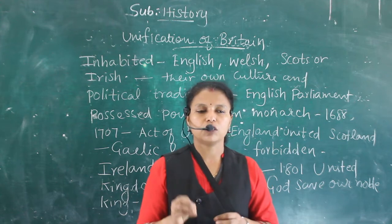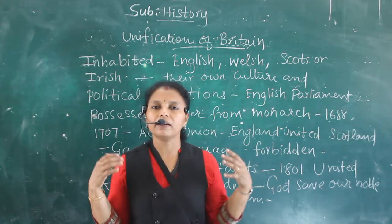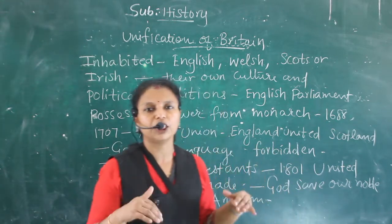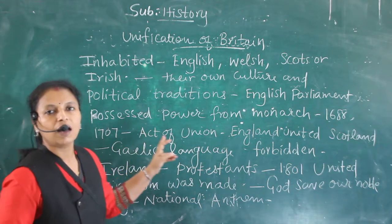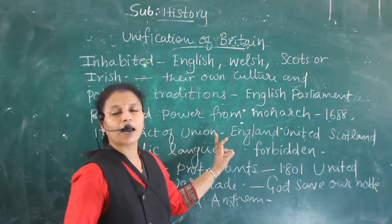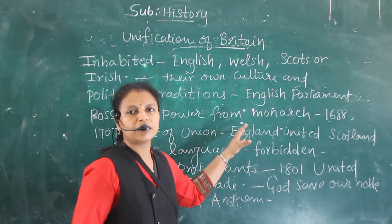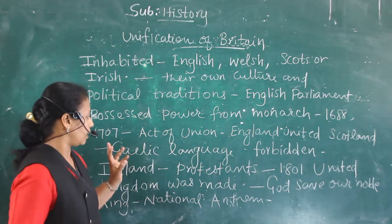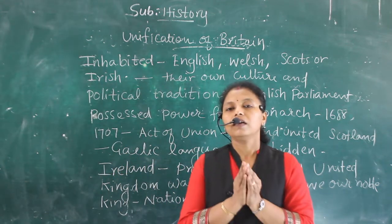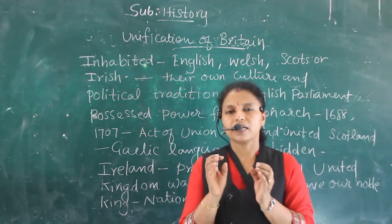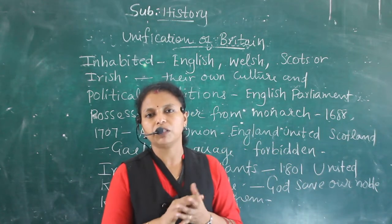First they reached Scotland. In Scotland, the Act of Union was made in 1707. According to that Act of Union, England united Scotland. England united Scotland by the Act of Union of 1707. The English people then made the English language their common language, and the Scottish language was no longer used as a daily language — it was forbidden.